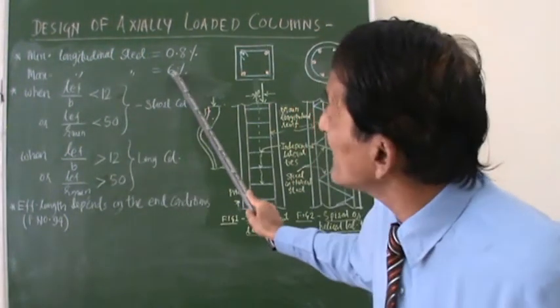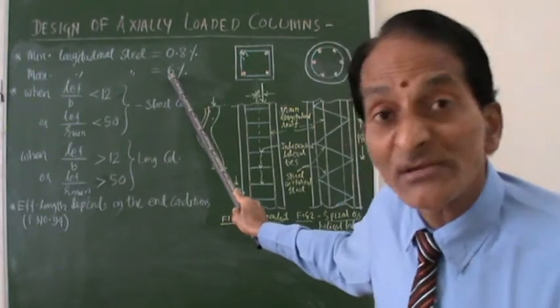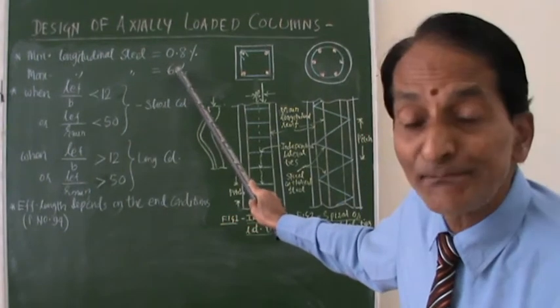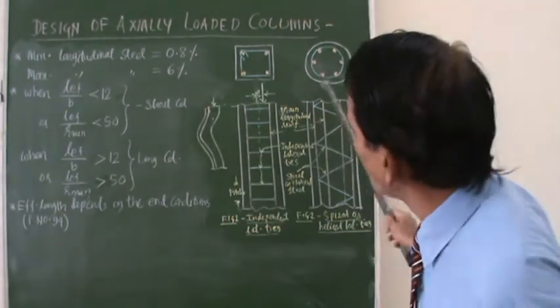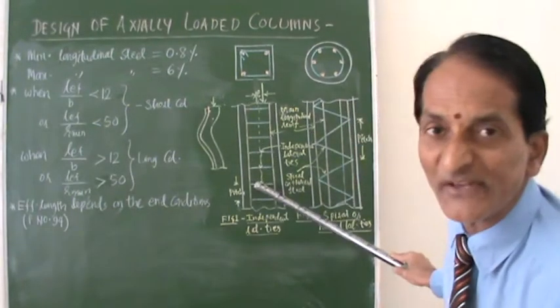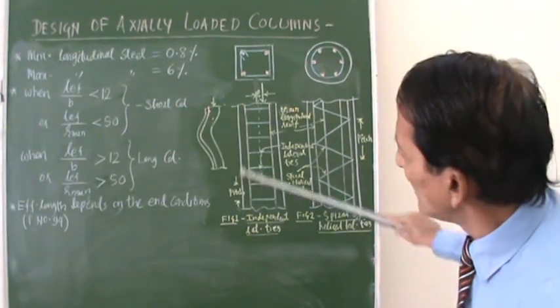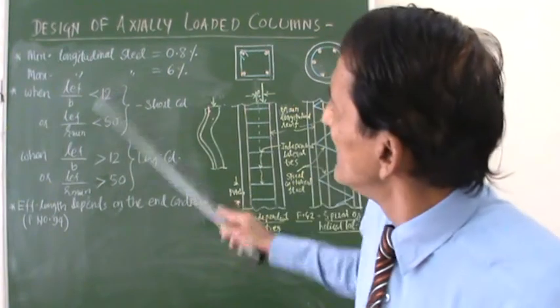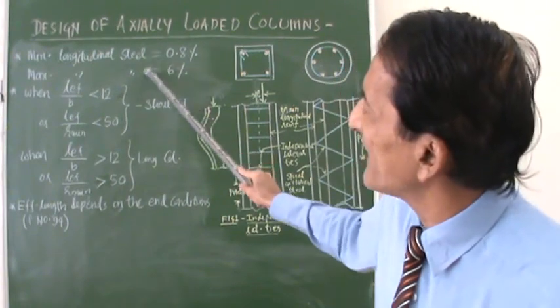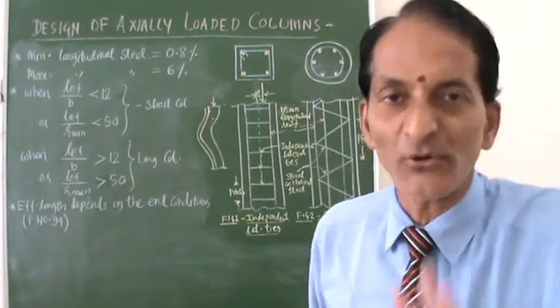Similarly, maximum steel - you cannot keep your steel more than 6%, because if you keep more than 6% of the cross-sectional area, then concreting becomes difficult. These are the two specifications in our IS code. Thank you very much.